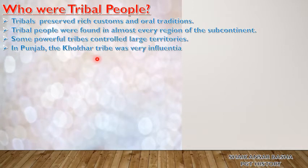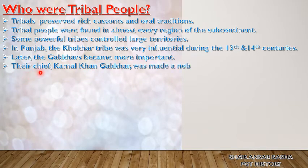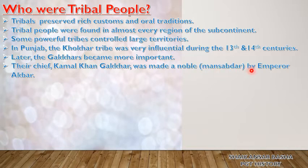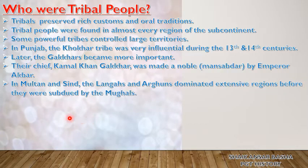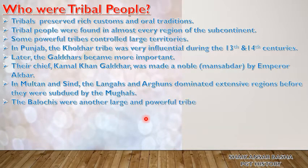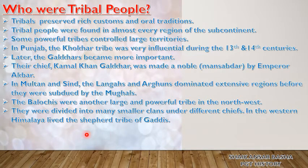In Punjab, the Khokar tribe was very influential during the 13th and 14th centuries. Later the Gakhars became more important in the northwest part of India. Their chief, Kamal Khan Gakhar, was made a noble (mansabdar) by Emperor Akbar, recognizing his strength and powerful caliber. In Multan and Sindh, both in Pakistan, the Langahs and Arghuns dominated extensive regions before they were subdued by the Mughals. The Baluchis were another large and powerful tribe in the northwest.